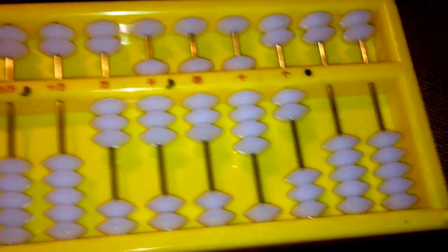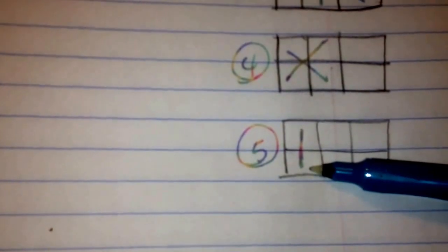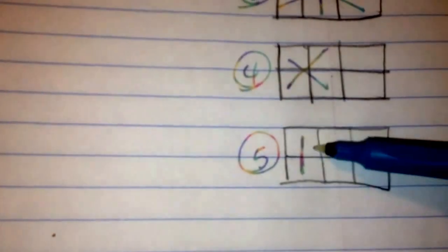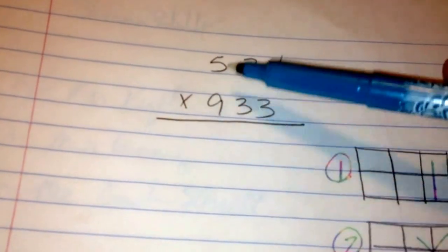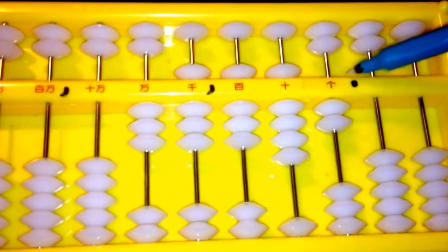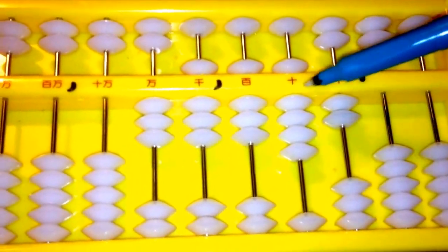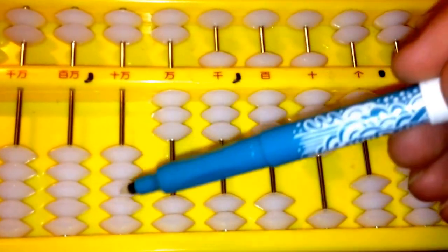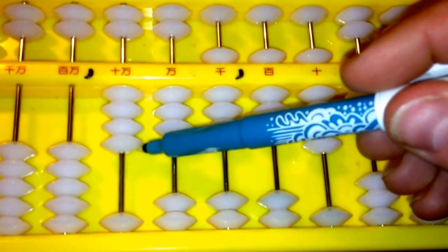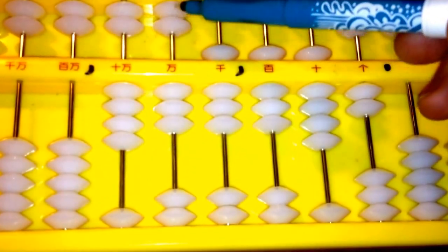Then, for our last digit, 5 places over from the decimal point, we are going to multiply our top left by our bottom left. So that is 9 times 5, which is 45. So here's our decimal point again, and we're 5 places over, 1, 2, 3, 4, 5. So 40 is going to go here, and then 5 is going to go here.